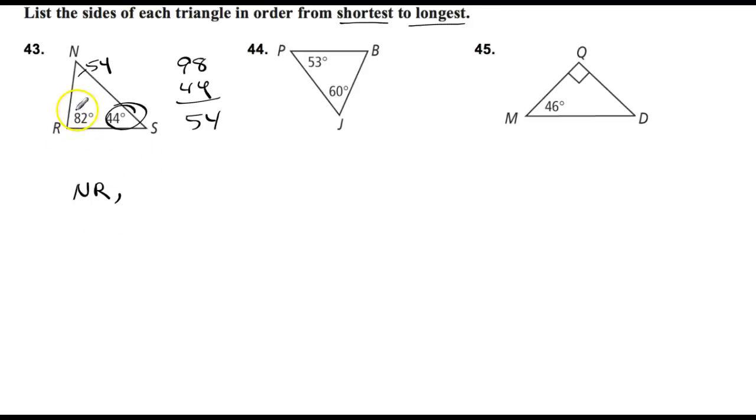And I always like to jump to the largest. The largest is going to be my last one listed. Well, the biggest angle is 82. Across from it is NS. So that goes last. And then the one in the middle is going to be across from 54. RS is going to go in the middle. That's the medium sized one. I'll let you do 44 and 45 on your own.